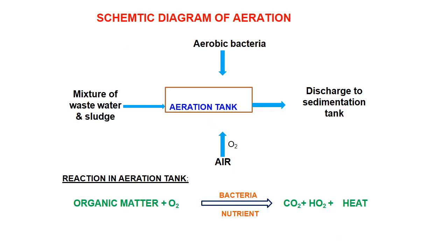Here is the schematic diagram of the aeration tank. In the aeration tank, the mixture of wastewater with sludge is incoming. Aerobic bacteria and air are added, and then it is discharged to the sedimentation tank where solids will slowly settle down. The reaction happening is organic matter reacting with oxygen in the presence of bacteria under aerobic conditions, breaking down solid matter into carbon dioxide and water.